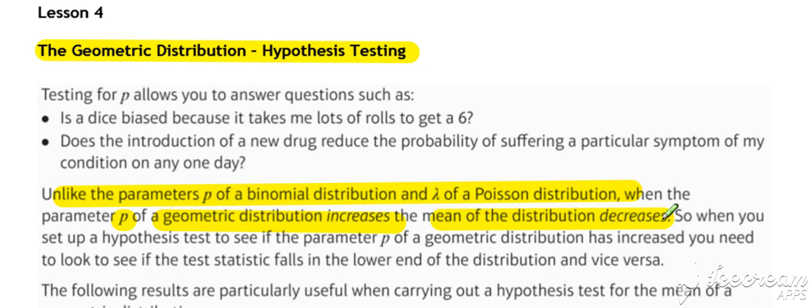So as p increases, the expected value decreases. When you set up the hypothesis to see if a parameter of a geometric has increased, you need to look to see if the test statistic falls in the lower end of the distribution.